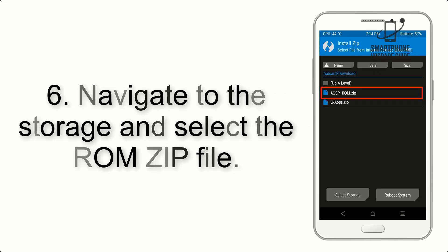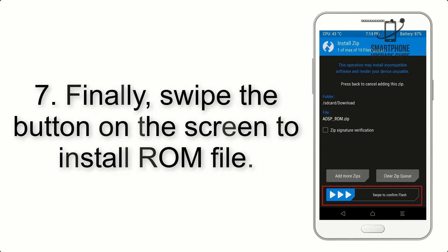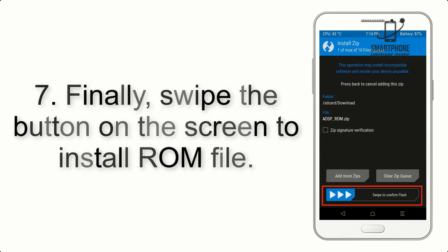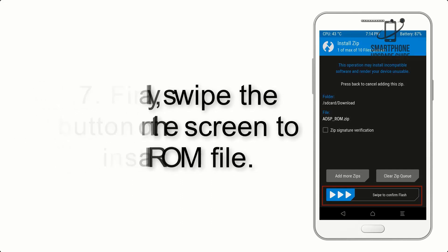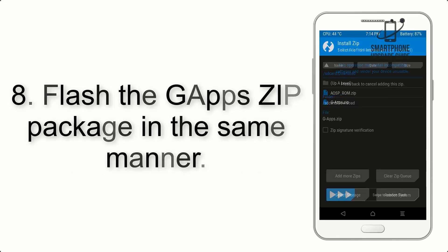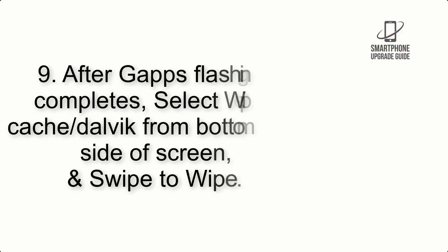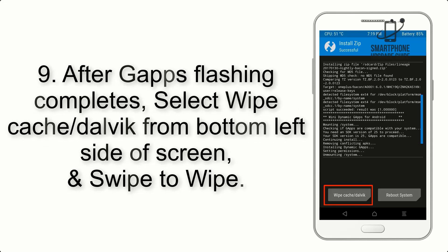Step 6: Navigate to the storage and select the ROM zip file. Step 7: Finally, swipe the button on the screen to install the ROM file. Step 8: Flash the GApps zip package in the same manner.